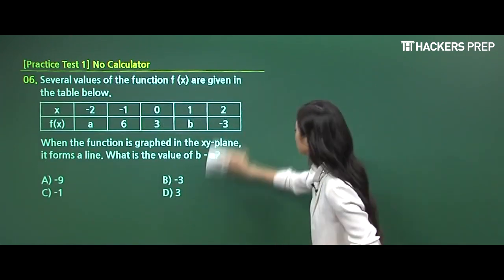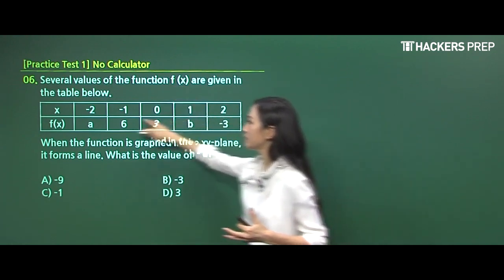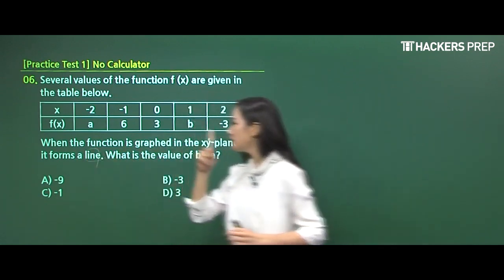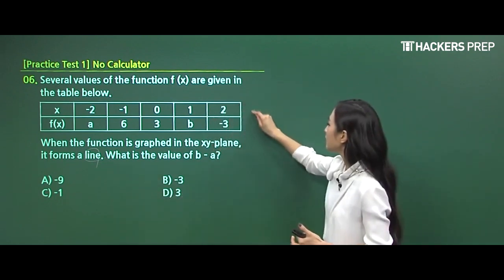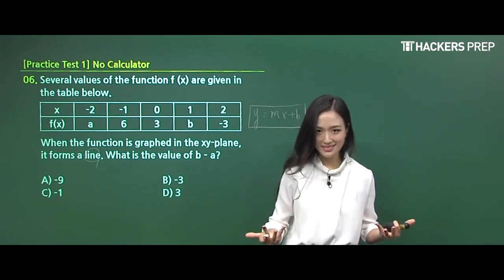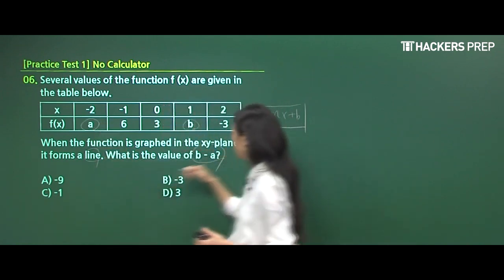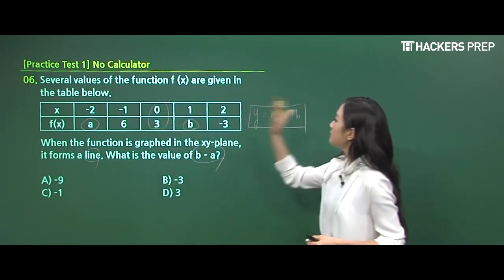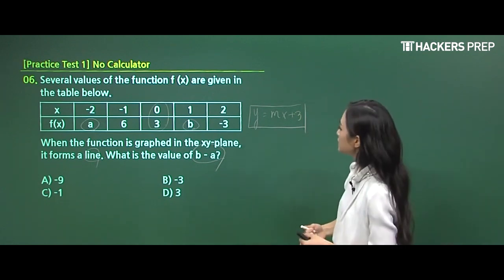Let's move on to number 6 and see what they're asking for. They present a table with five values given. F of X are the results that it generates after you plug in the input value. When the function is graphed in the plane, it forms a line. So this one word was the crucial information. We know that it is not going to be a parabola rather in a linear trend. That's why all we need to do is involve the general standard formula of a line, which is the slope intercept form. Just plug in the values and find our B value, A value, and finally look for the difference. When X is equal to 0, my final output must have a value of 3, so my Y intercept pops up real quick as a positive 3.